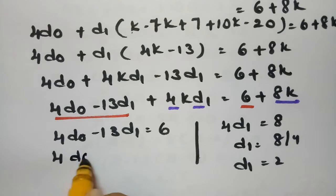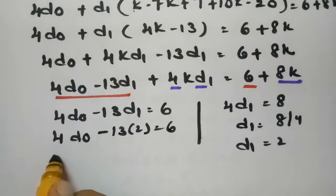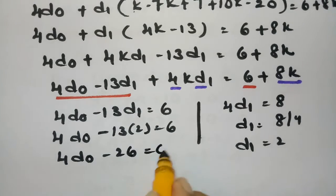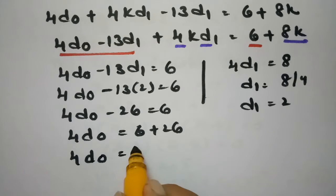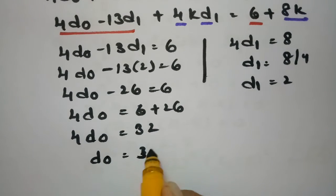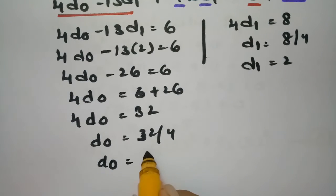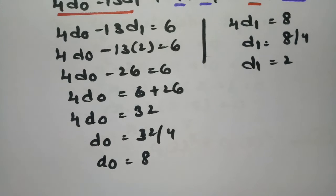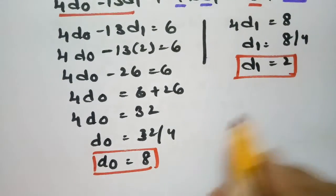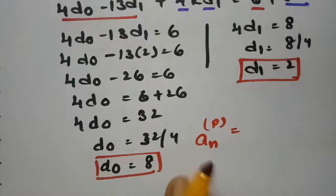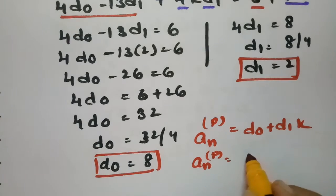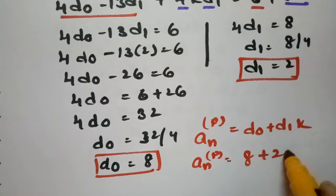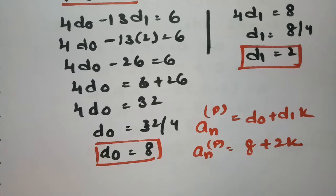Substituting D1 = 2 into the constant-term equation: 4D0 - 13(2) = 6, so 4D0 = 6 + 26 = 32, giving D0 = 8. Therefore the particular solution is An(P) = 8 + 2k.